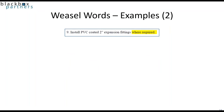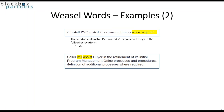More examples. 'Install PVC coating 2-inch expansion fittings where required.' The phrase 'where required' is broad enough to be interpreted a number of different ways. We could make it much more specific by simply saying where we want it required: 'The vendor shall install PVC coating 2-inch expansion fittings in the following locations,' and then list out the locations where you want the expansion fittings.